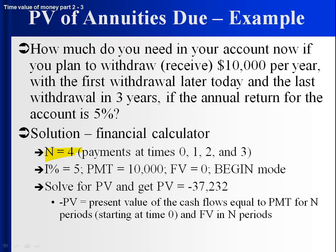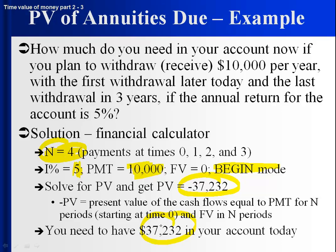So we can go ahead and attack this using the financial calculator. N equals four — we've got four payments. The discount rate is 5%, and the payment is $10,000. We're in begin mode, so we know we're going to get $10,000 today, and then in one, two, and three years, because that gives us four payments. Solve for PV. You get the opposite sign, so the present value of $10,000, $10,000, $10,000, and $10,000 starting today is equal to $37,232, and that's what you need in your account today.